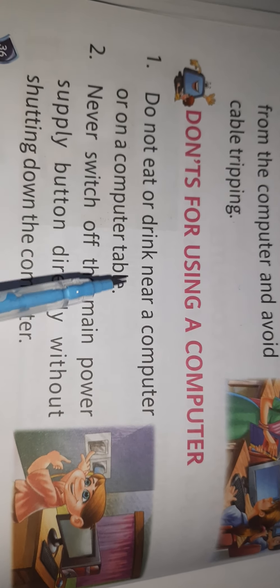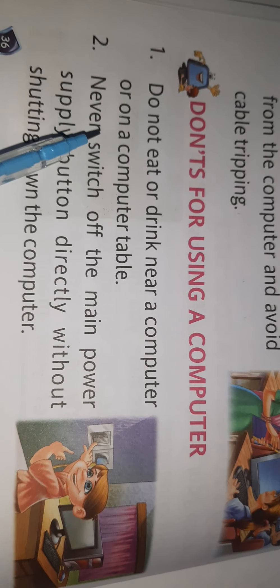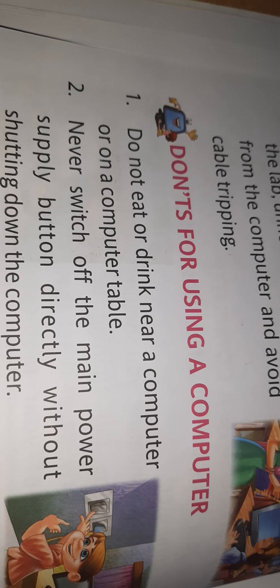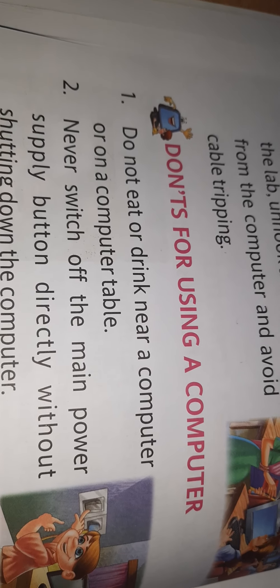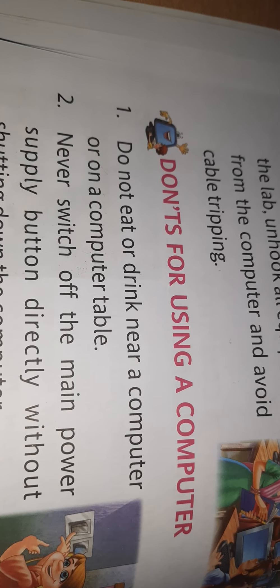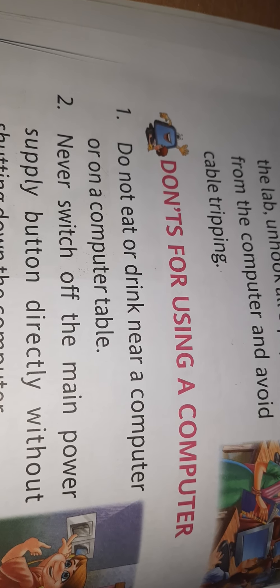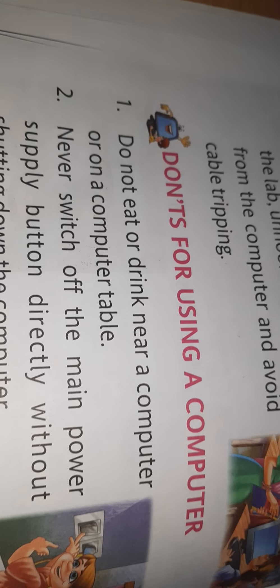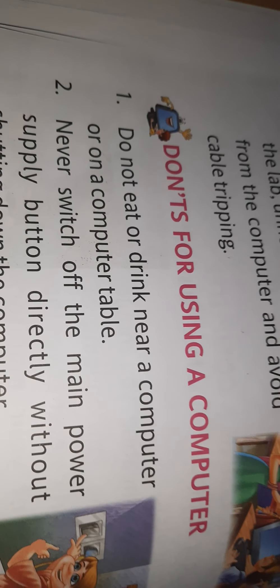Number 1: Do not eat or drink near a computer or on a computer table. We should not drink or eat anything near a computer table because, first of all, it may create dirt and the dirt can accumulate in the system. Secondly, it can invite mice and ants because they may come in search of food there and can damage the system. So we should not eat or drink anything near the system.